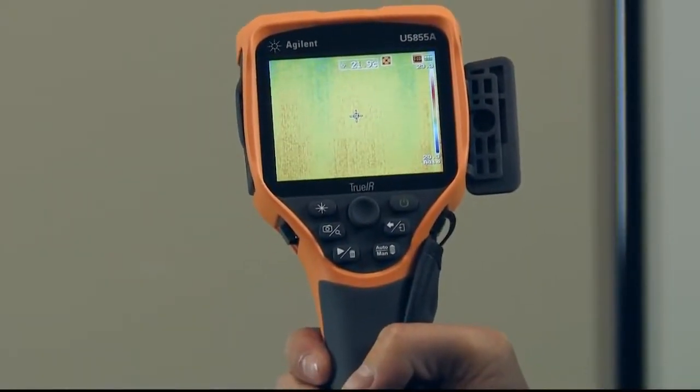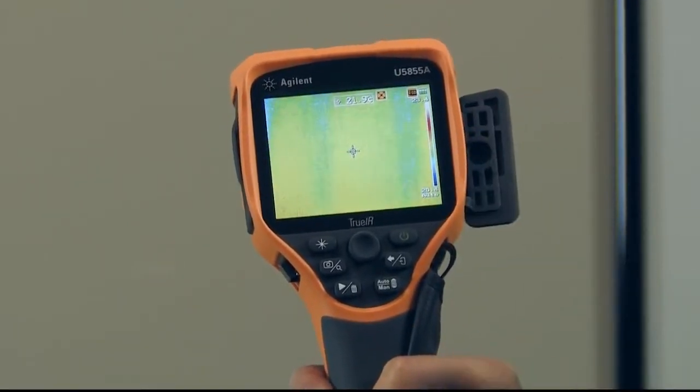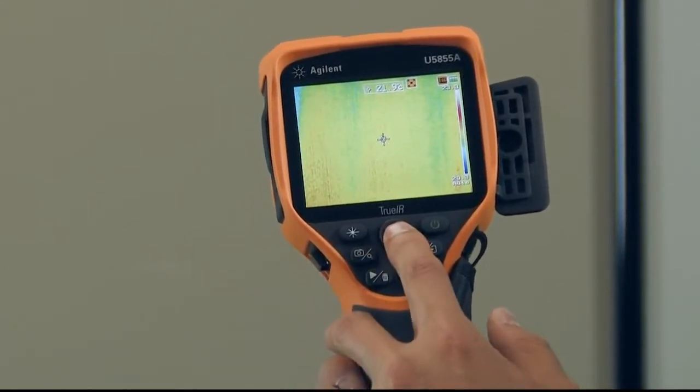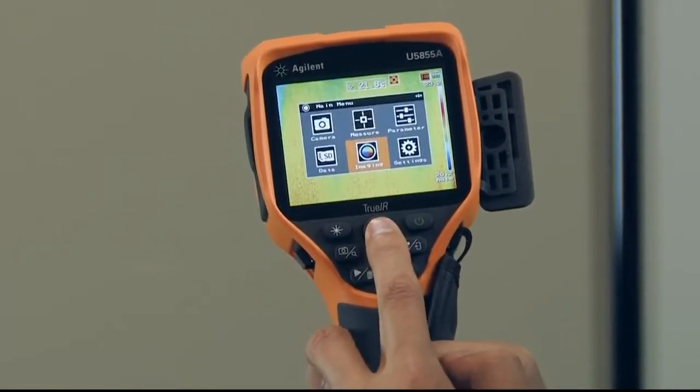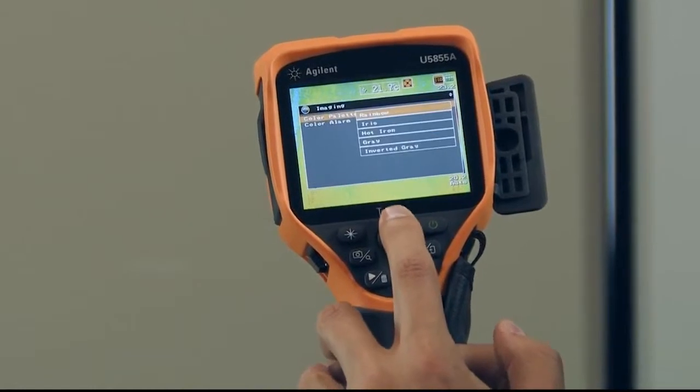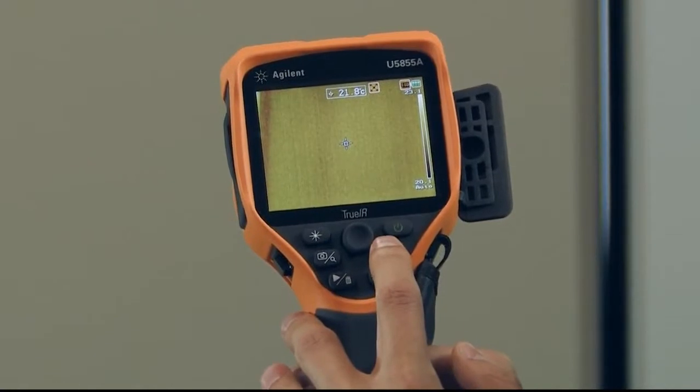Right now we have a multicolor scheme which shows hot and cold in varying degrees of color. But if we actually just want to see what's hot and cold it's better to go to a monochromatic color scheme. So I'm just going to press the center button here and go into my main menu and press imaging color palette and just select a monochrome color scheme. I'm going to get back out of that scheme.